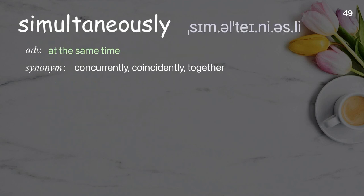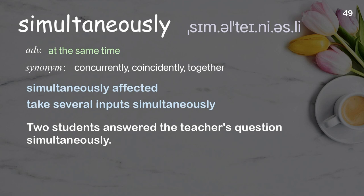Simultaneously: At the same time. Examples: Simultaneously affected, Take several inputs simultaneously. Two students answered the teacher's question simultaneously.